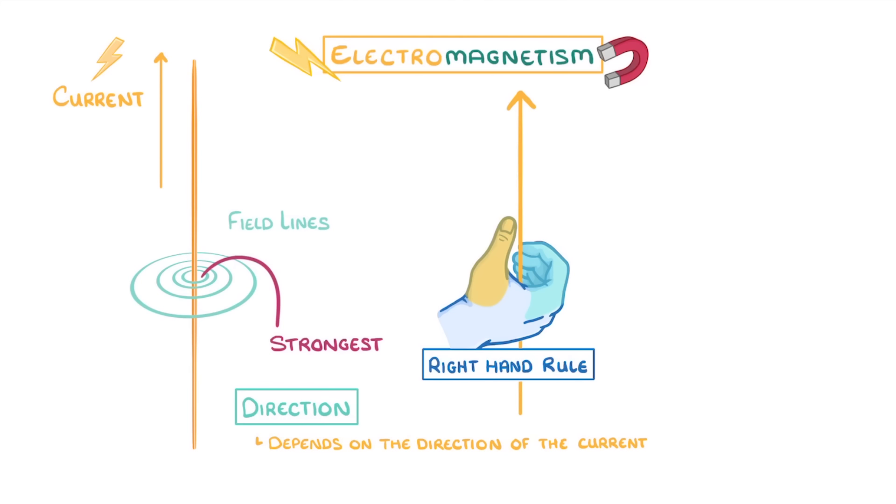So for our wire, in which the current is going upwards, the magnetic field would be going anti-clockwise. And so we would mark each of our concentric circles with little arrows in that direction.